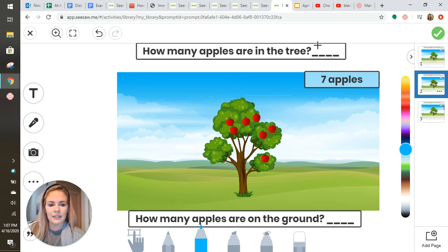So I'll get my utensil to write a seven. Then, how many apples are on the ground? Zero. So I'll write a zero.